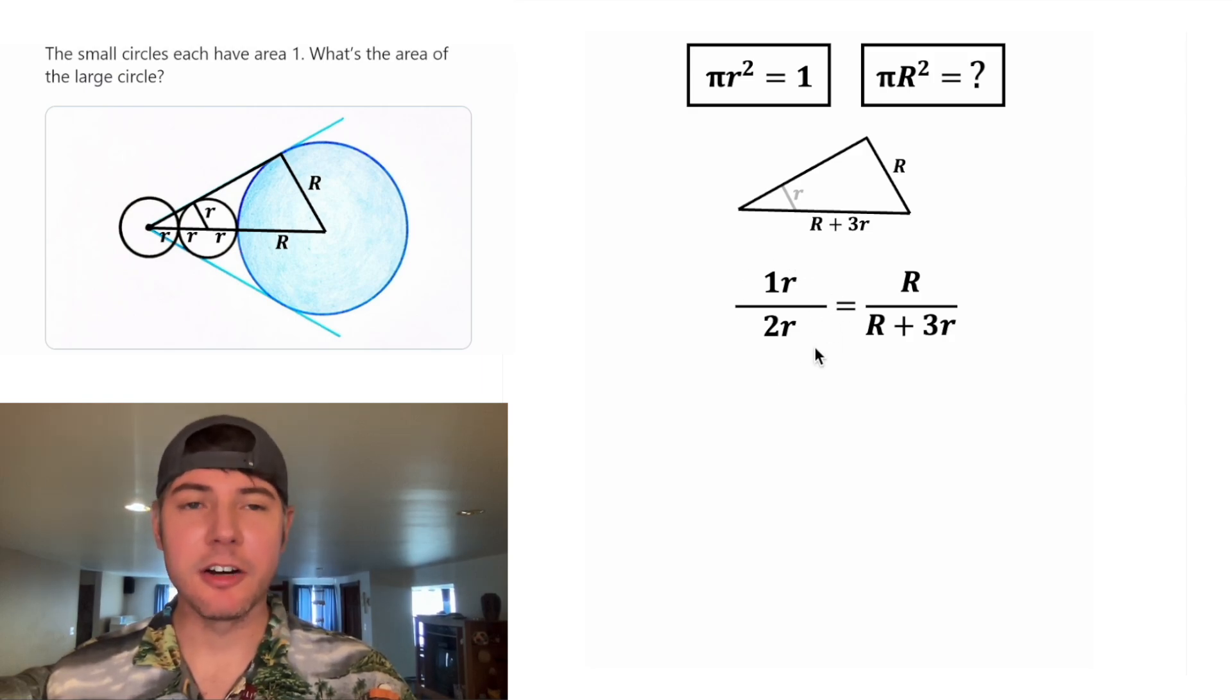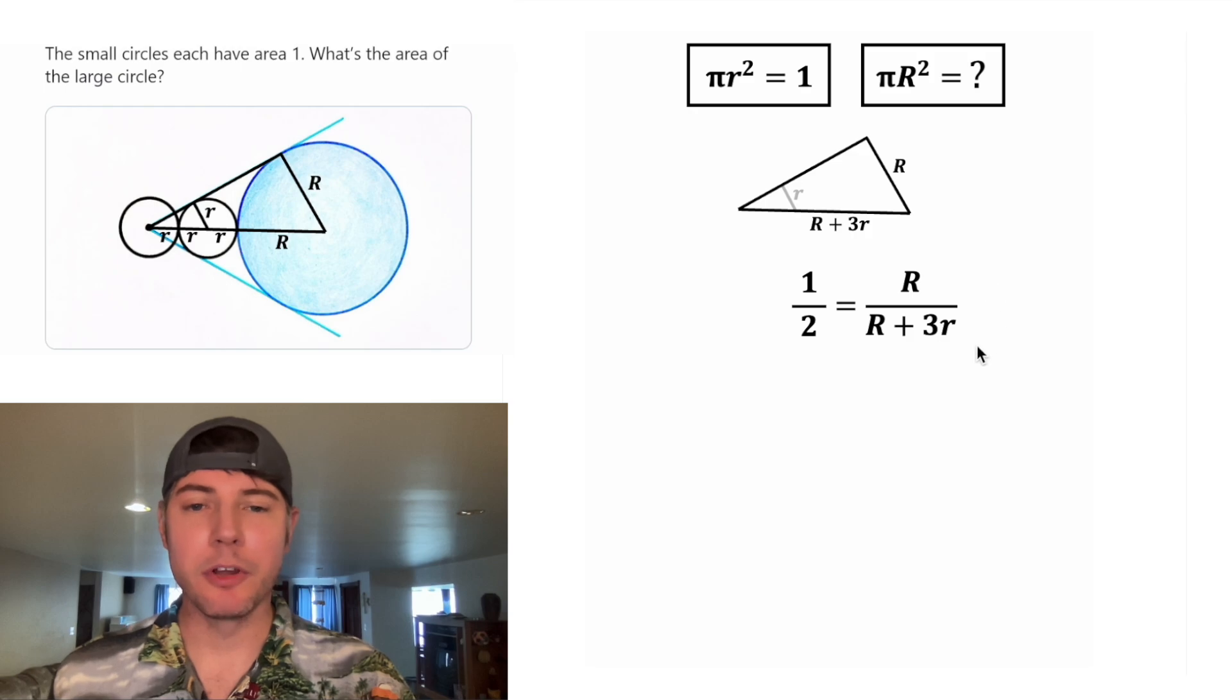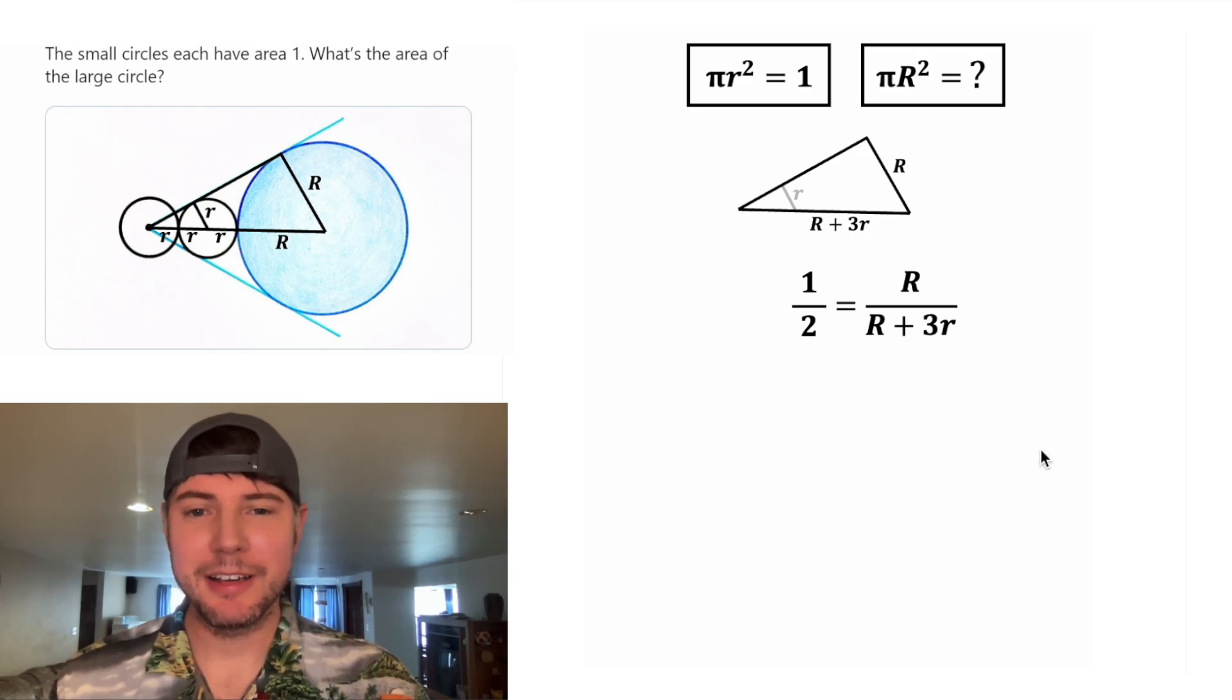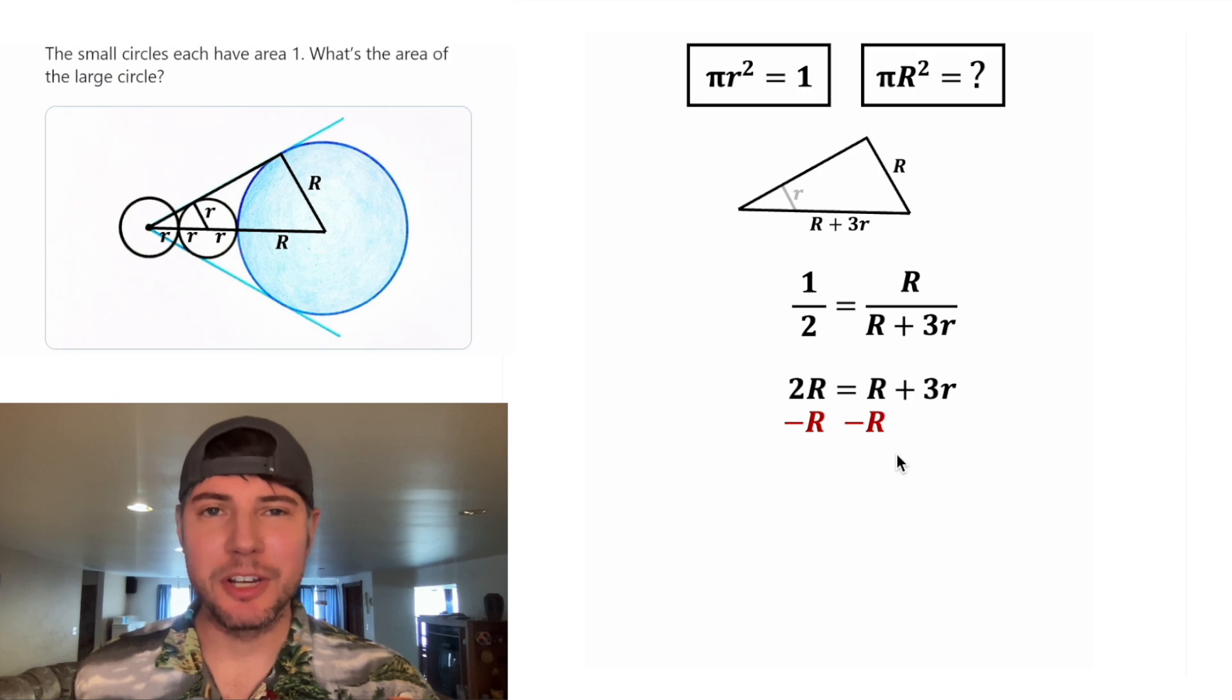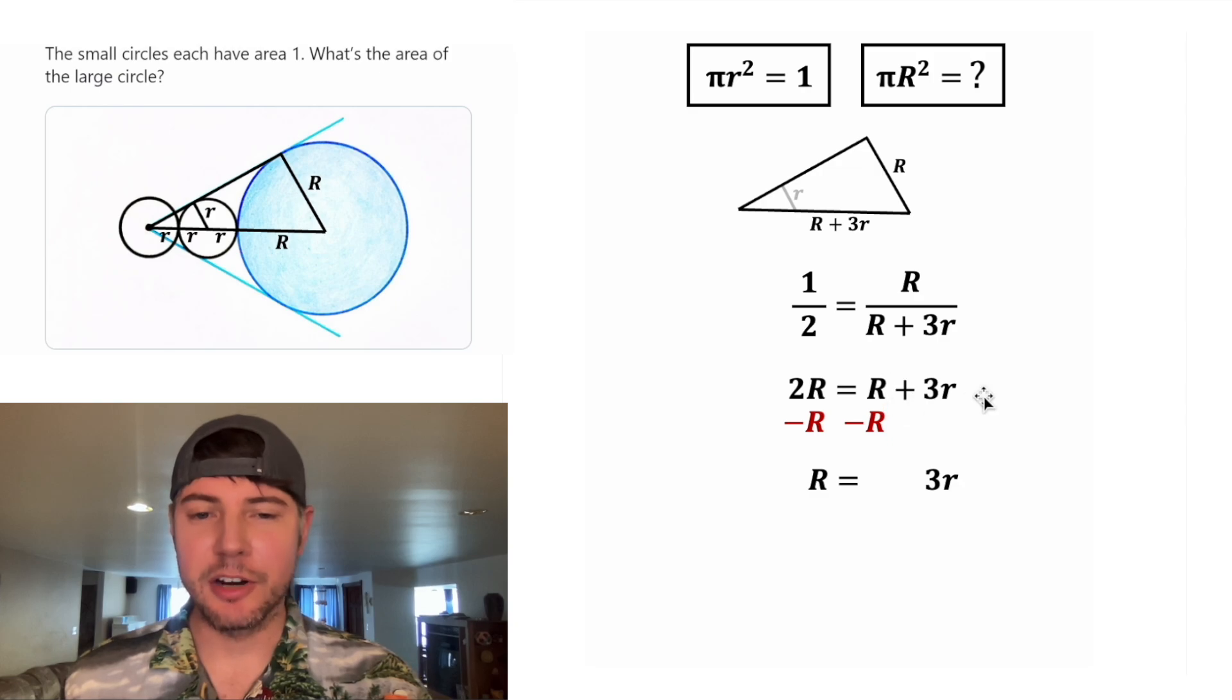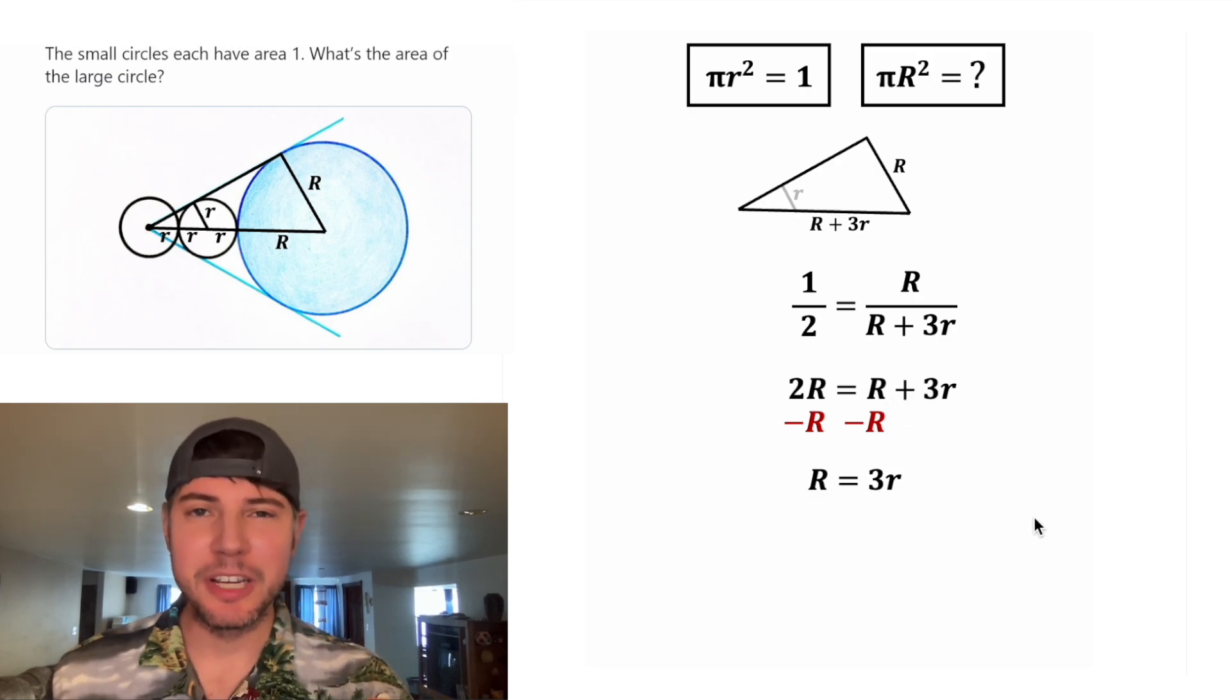On this side, the little r and the little r are gonna cancel each other out. So that leaves us one half is equal to big R over the quantity big R plus three little r. Next, we can cross multiply. Two times big R is two big R, and then one times this is just gonna be this. Next, we can subtract big R from both sides of the equation. On the left-hand side, two big R minus one big R is one big R. And on the right-hand side, these cancel each other out to give us three little r. So we end up with big R is equal to three little r.